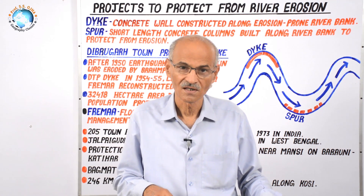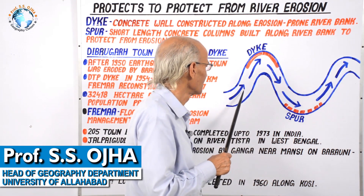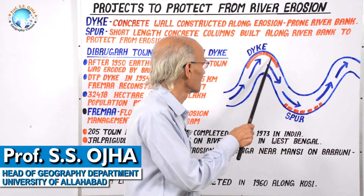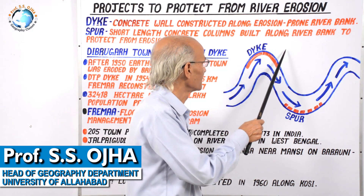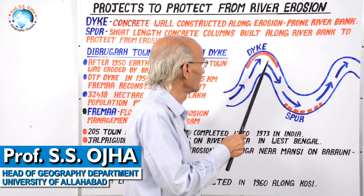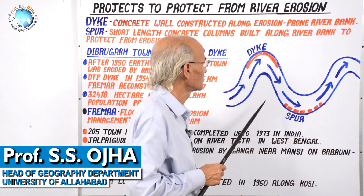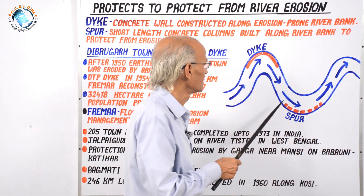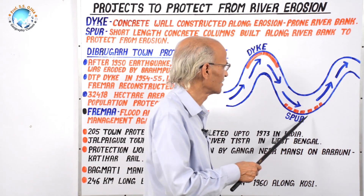The people and government there are concerned with this. Suppose this is a meander and the direction of flow is such that this side of the meander is being eroded laterally. As a result, landscapes here — railway tracks, roads, towns, villages — are all subject to erosion. That's why the government plants dikes here.